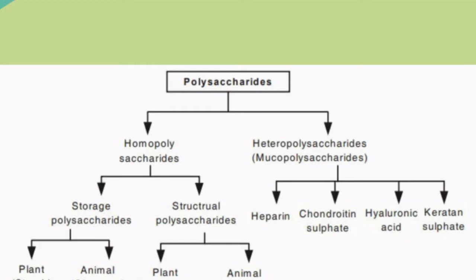Homopolysaccharides are classified into storage polysaccharides and structural polysaccharides. Storage or reserve polysaccharides are present in both plant and animal origin. The example for storage polysaccharide in plants is starch, and in animals it is glycogen. Cellulose is the plant structural polysaccharide, while chitin forms the exoskeleton of crustaceans in animals.